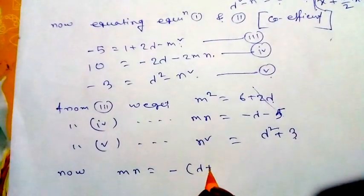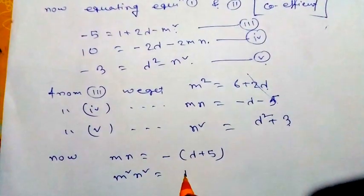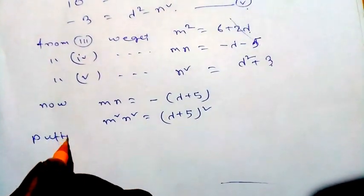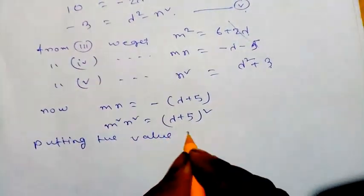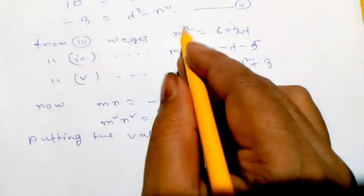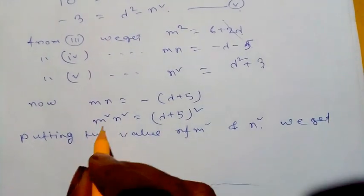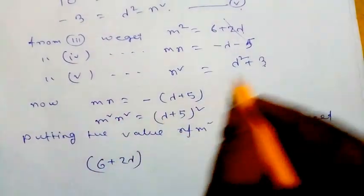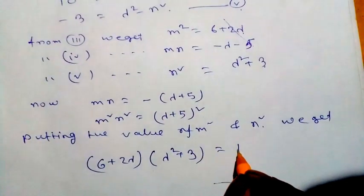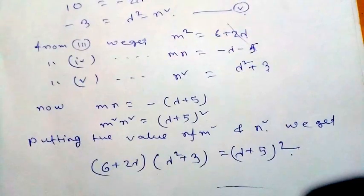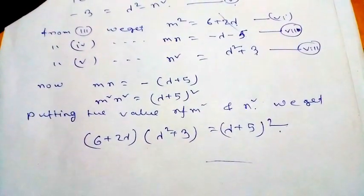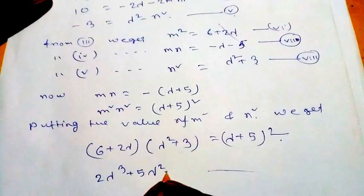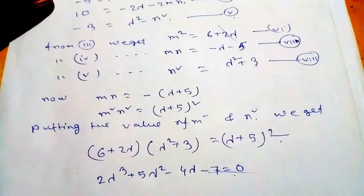Since mn = -(λ + 5), we have m²n² = (λ + 5)². Substituting the values of m² = 6 + 2λ and n² = λ² + 3, we get (6 + 2λ)(λ² + 3) = (λ + 5)². Solving this equation gives the cubic: 2λ³ + 5λ² - 4λ - 7 = 0. Our target is to find the value of λ that satisfies this equation.